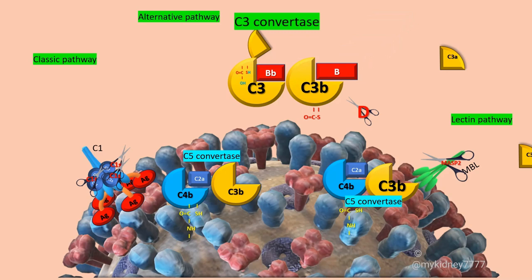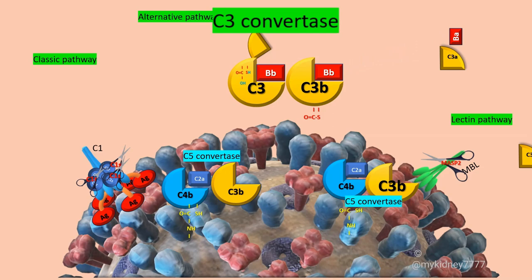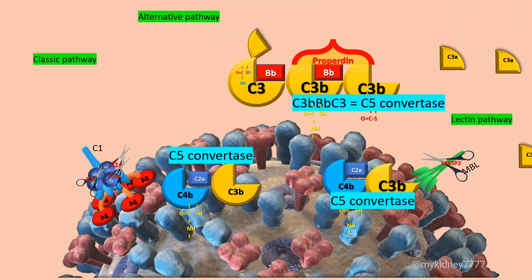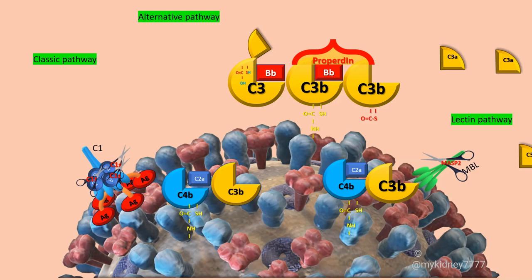The C3 convertase of the alternative pathway of the complement is generated by the linking of C3B fragment and the BB fragment of B-factor, cleaved by D-factor, which is then stabilized by the linking of properdin. When C3 convertase attach a C3B fragment, the C5 convertase is formed and cleaves C5 in C5A, which is also anaphylatoxin, and C5B.